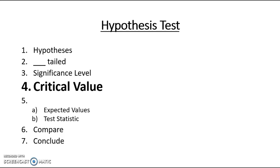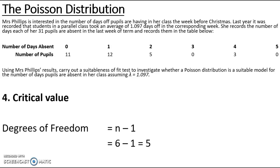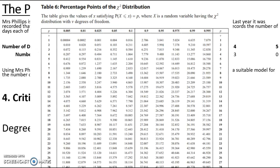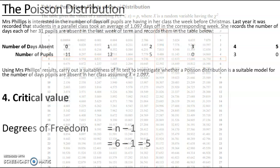Step four is finding the critical value. In the table of data we have six possible values for days absent: zero, one, two, three, four, or five, so n equals six and degrees of freedom is n minus one, which is five. Looking at the percentage points of the chi-squared distribution in table six, going across five degrees of freedom at the upper five percent (0.95), the critical value is 11.070.